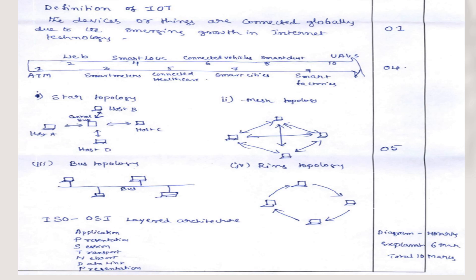The next question was on network topology. You have four topologies. Draw all four topology diagrams with explanation, which is 5 marks. For the OSI layered architecture, these are the layers you will be explaining with a diagram. The explanation carries 6 marks and the diagram carries 4 marks, so totally it is 10 marks.